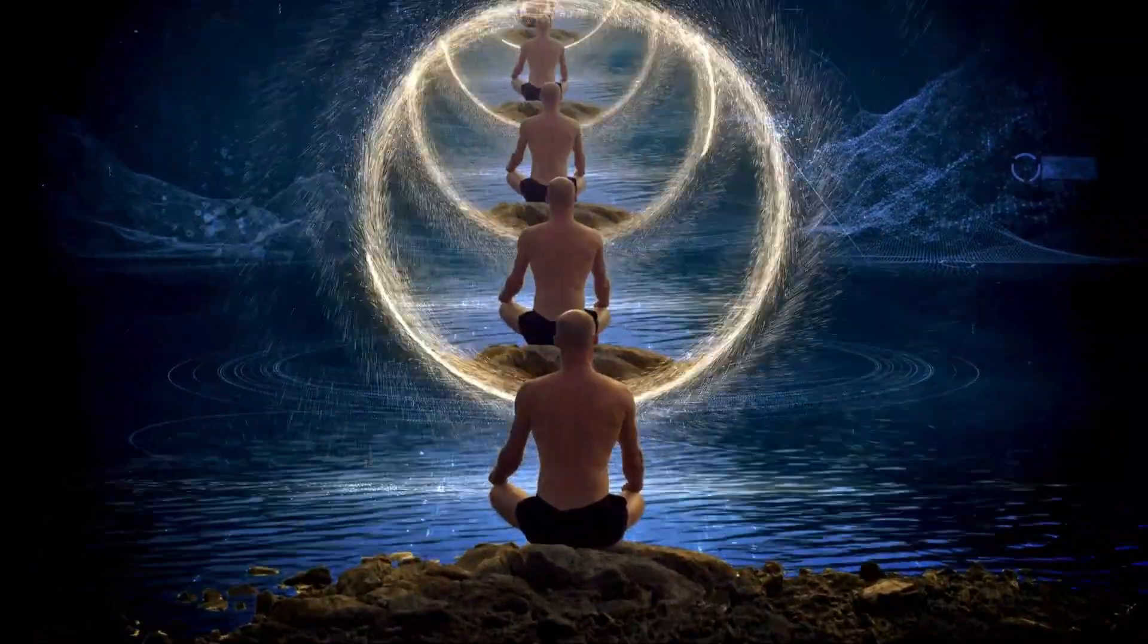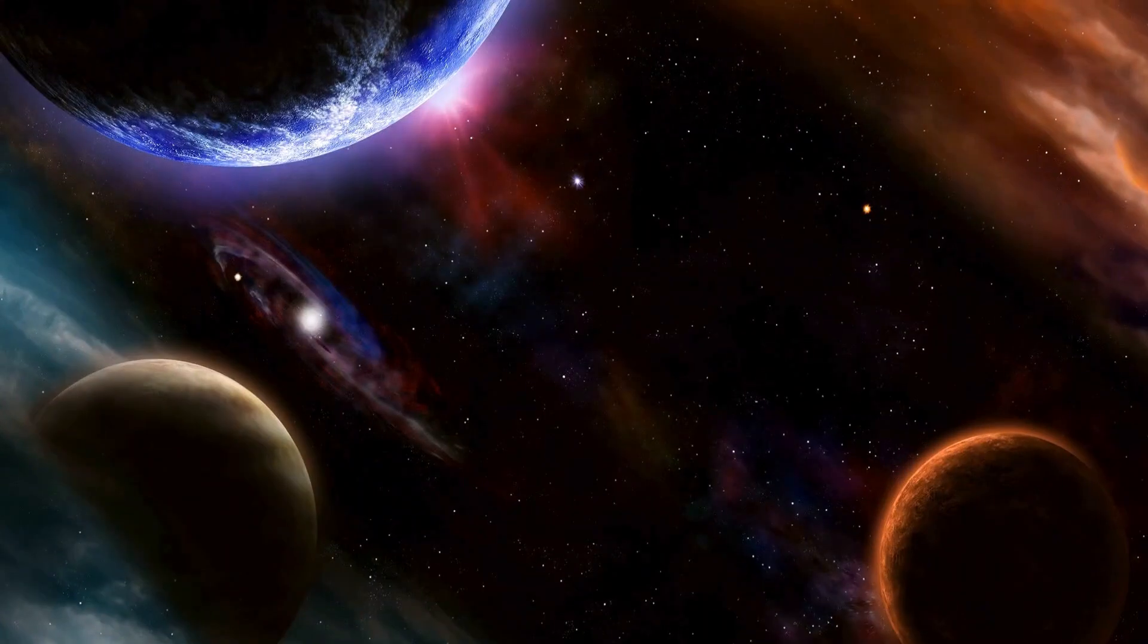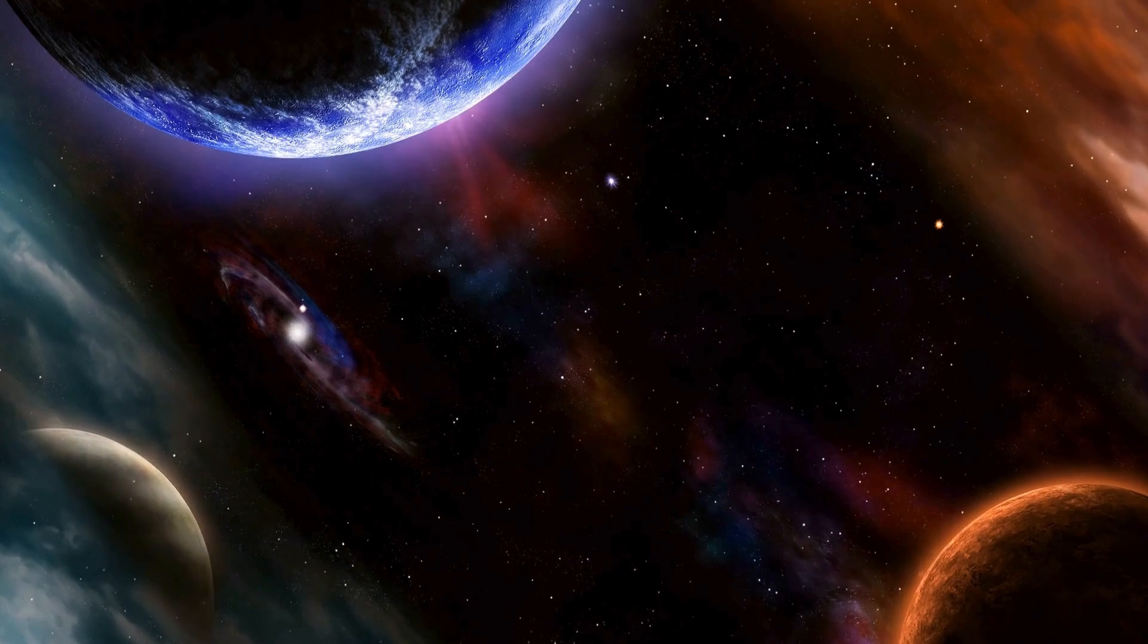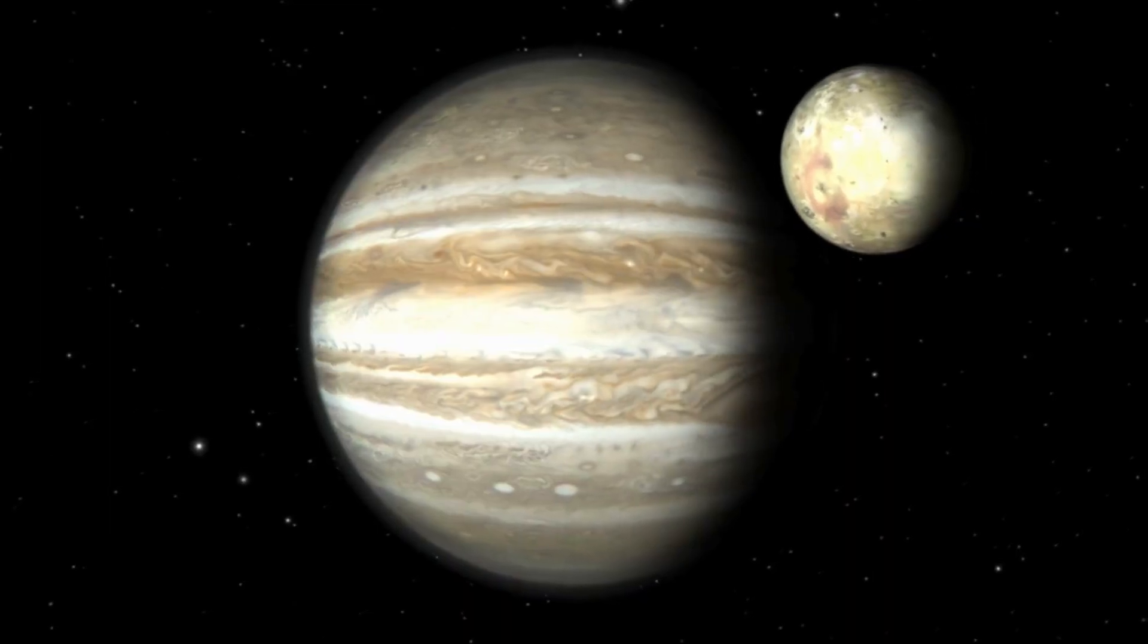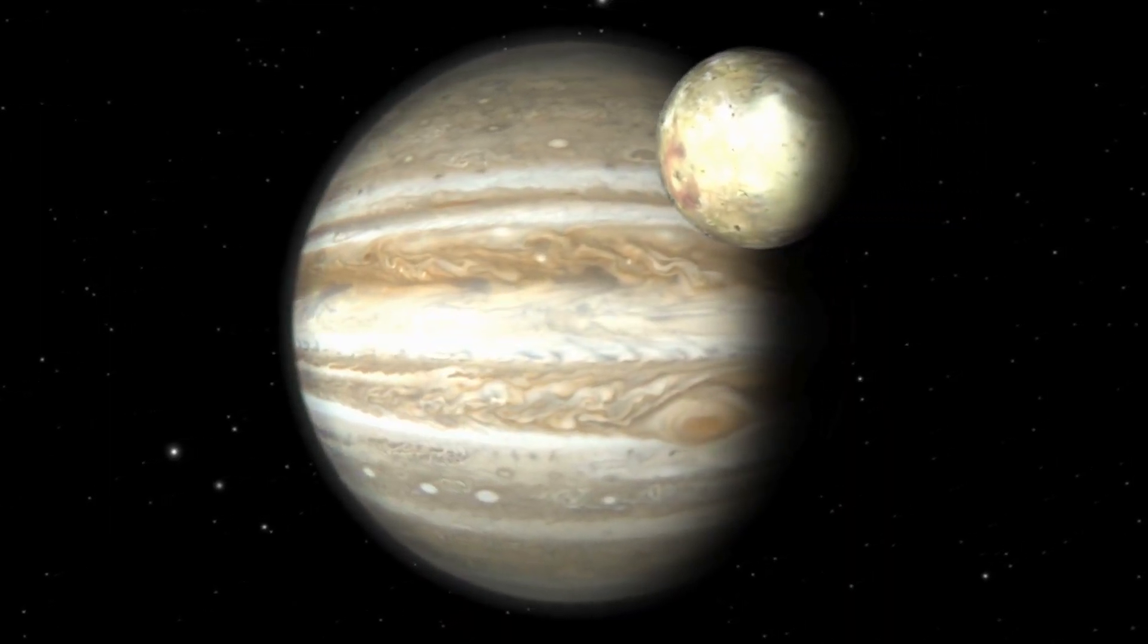Andromeda is massive, with a mass estimated to be between 1 and 2 trillion times that of our Sun, and is thought to be about 10 billion years old, suggesting a complex history of formation through the merging of smaller proto-galaxies.